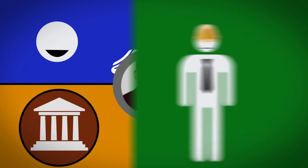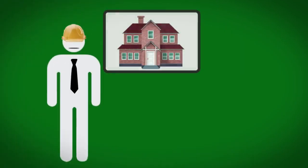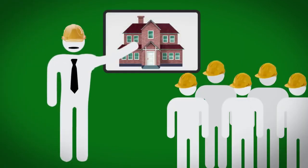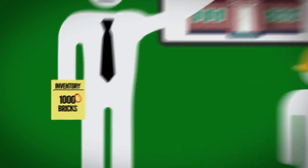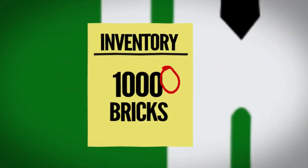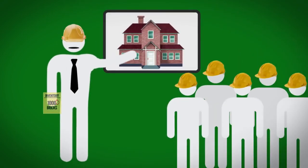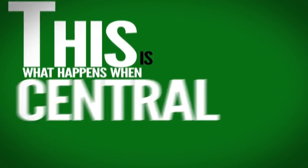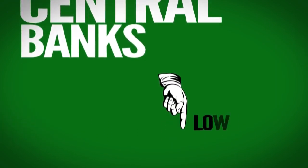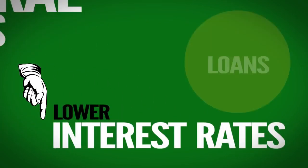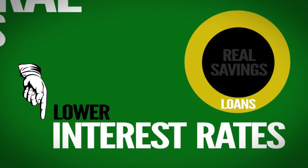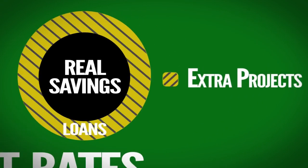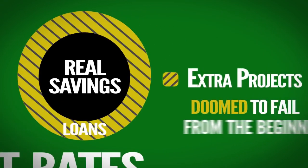For example, if a bricklayer thinks he has 10,000 bricks and starts a new construction project, but he really only has 1,000 bricks, he is destined to fail. And there will be an inevitable bust as he runs out of bricks. This is what happens when central banks artificially lower interest rates. Too many loans are given relative to the amount of real savings in the economy, and those extra projects are doomed to fail from the beginning.